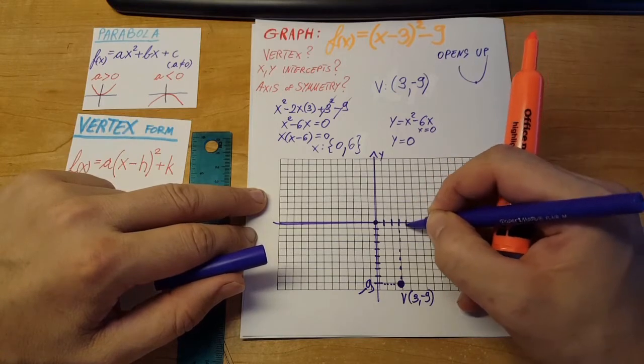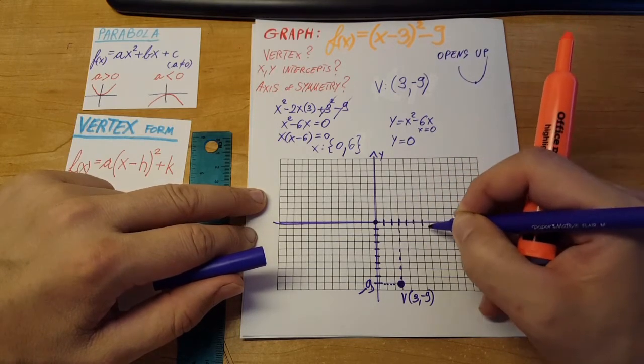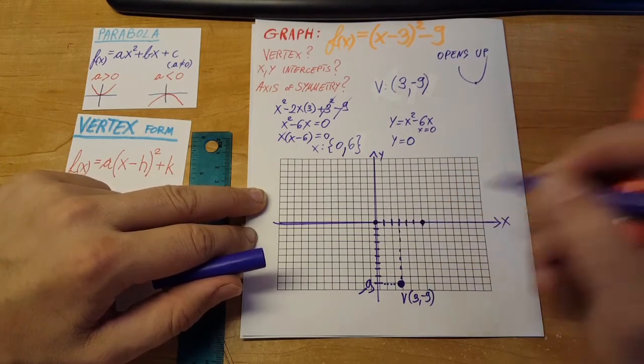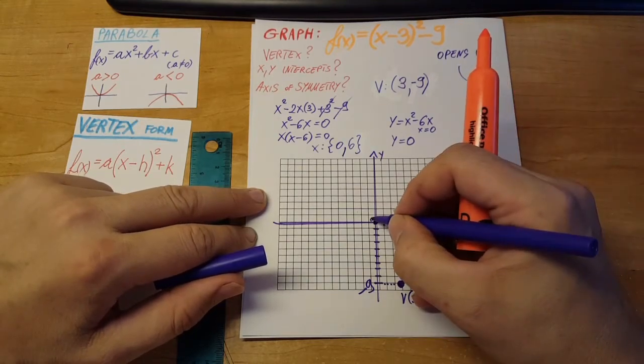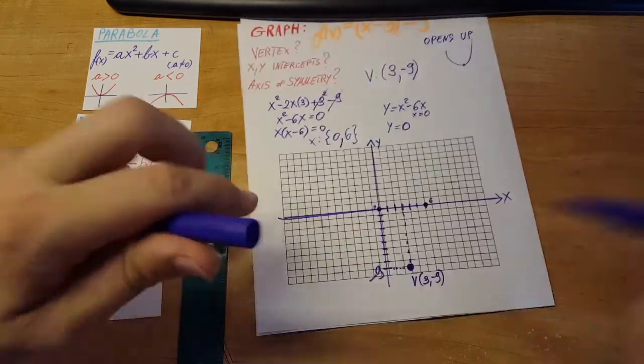So it's gonna cross the x-axis at 0, and it's gonna cross again at 6. So 1, 2, 3, 4, 5, and 6, right here. This is our 0, this is our 6.